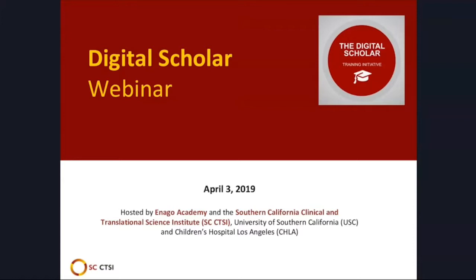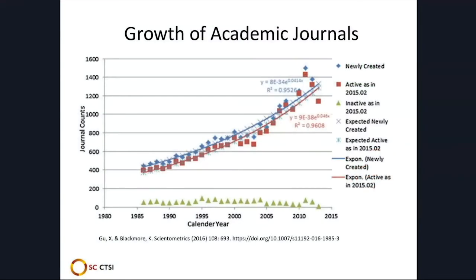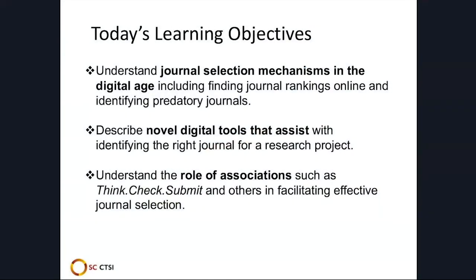Hello and welcome to today's Digital Scholar webinar. My name is Katja Reuter. Today we will spend some more time exploring scientific communication in the digital age. We will look at digital strategies to find the right journal for publishing your research. There are tens of thousands of academic journals to choose from, and submitting a paper to a journal that is not the right fit is a key cause for rejection. The second journal boom in history doesn't make this any easier. This webinar will provide an overview of digital tools and initiatives that help researchers select the right journal. After today's webinar you will be able to understand journal selection mechanisms in the digital age, describe novel digital tools that help you identify the right journal, and understand the role of associations in facilitating effective journal selection.